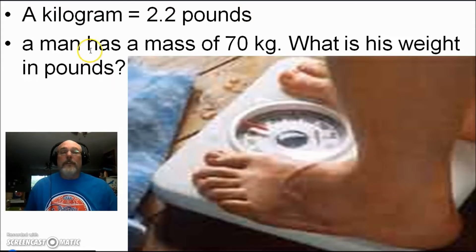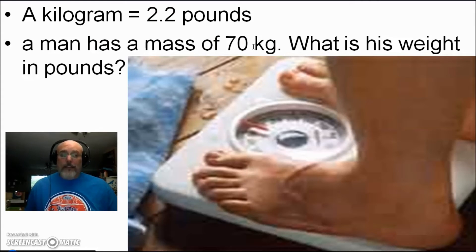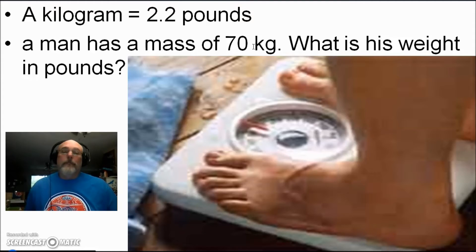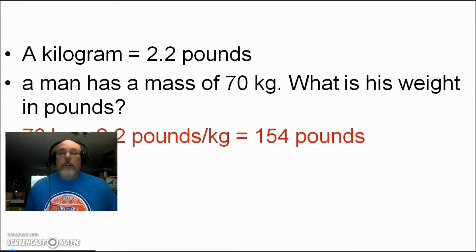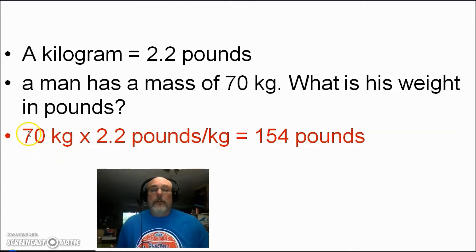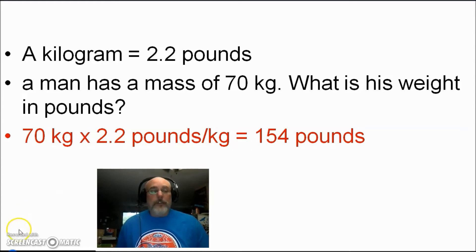What if the man steps on a scale and has a mass of 70 kilograms? Is this going to be more or less than the previous example? It's definitely going to be less because previously he was 100 kilograms. We do it the exact same way: 70 kilograms times 2.2 pounds per kilogram — use a calculator — equals 154 pounds.